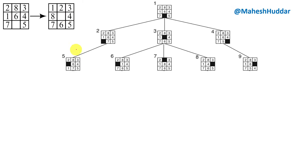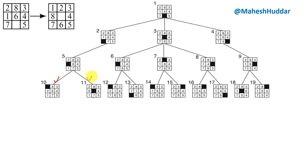If any state matches the goal we stop; otherwise we keep expanding. Looking at states five through nine, none of them match the goal state. Starting with state five, the blank can move up, right, or bottom, but moving bottom returns the parent. So there are only two valid possibilities — moving up or right — giving us states 10 and 11. Neither matches the goal state.